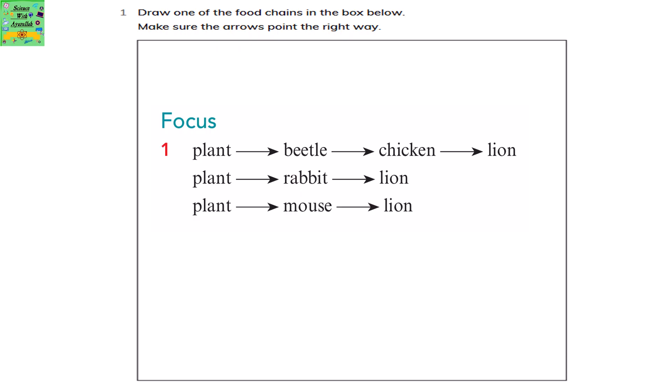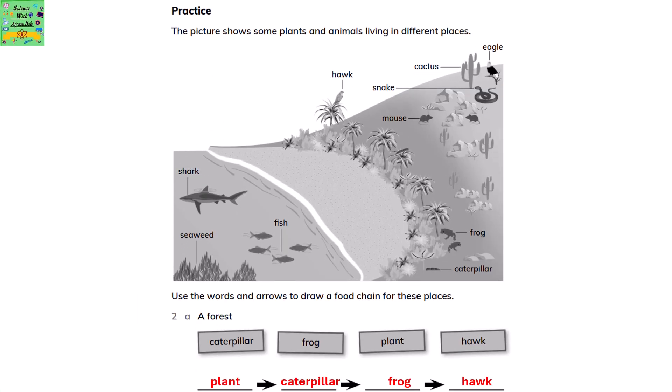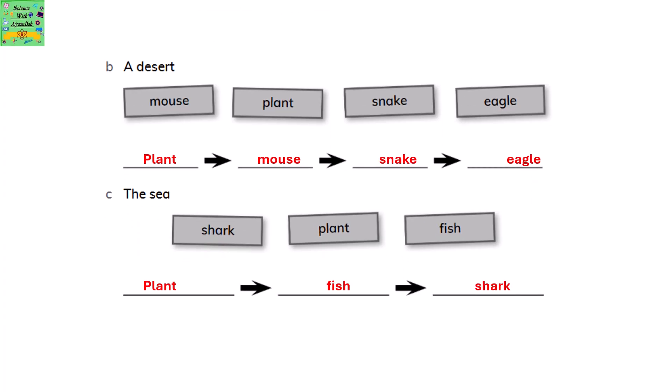Plant eaten by a mouse, mouse eaten by a lion. The picture shows some plants and animals living in different places. Use the words and arrows to draw a food chain for these places. In a forest: plant eaten by a caterpillar, frog eats the caterpillar, hawk eats the frog. In a desert: plant eaten by a mouse, snake eats the mouse, eagle eats the snake. In the sea: plant eaten by a fish, fish eaten by a shark.